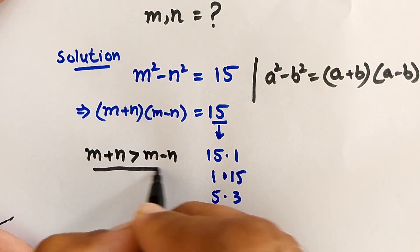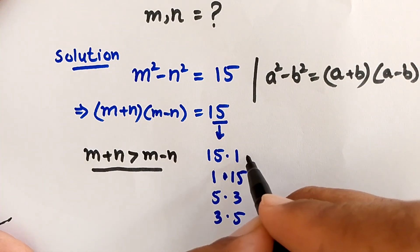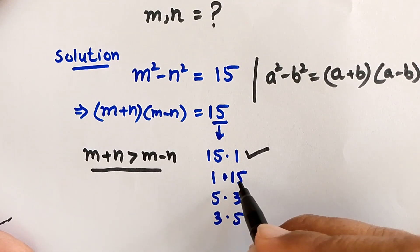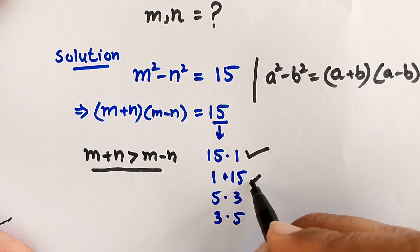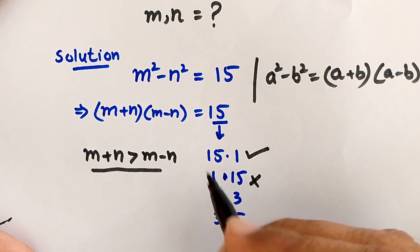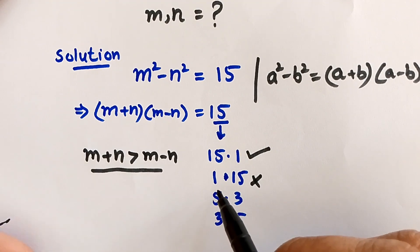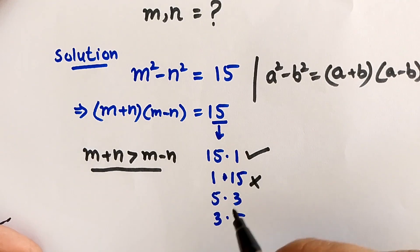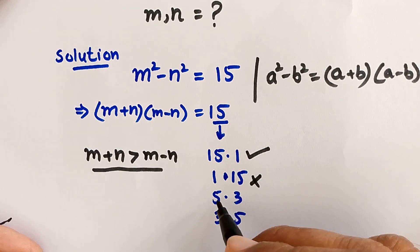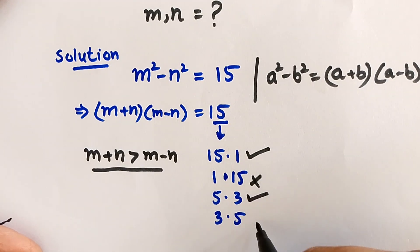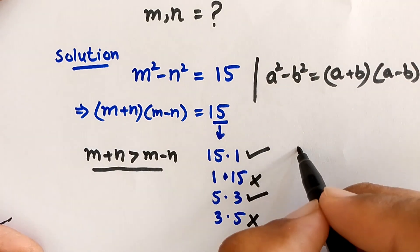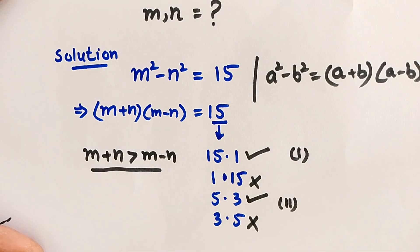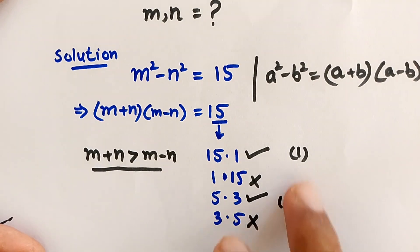Applying the condition that m plus n must be greater than m minus n: Case 1 (15 × 1) is valid because the first number is greater. Case 2 (1 × 15) is invalid. Case 3 (5 × 3) is valid, and Case 4 (3 × 5) is invalid. So we have two valid cases to solve.